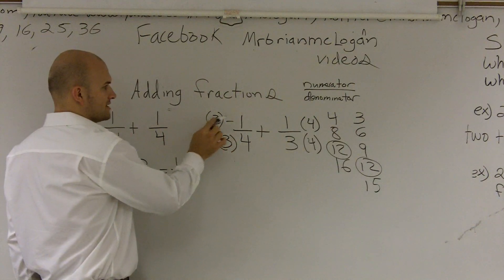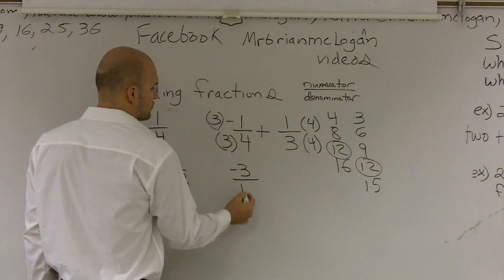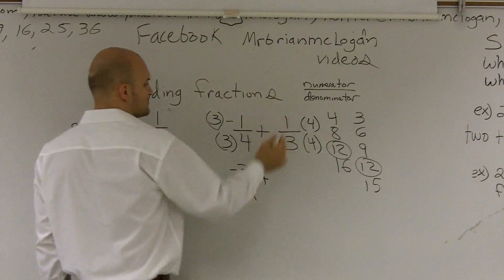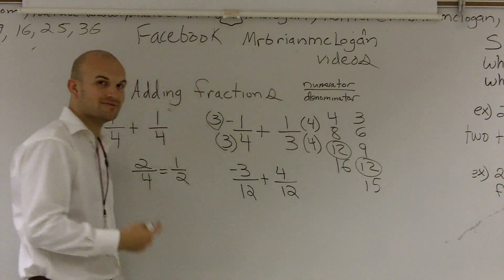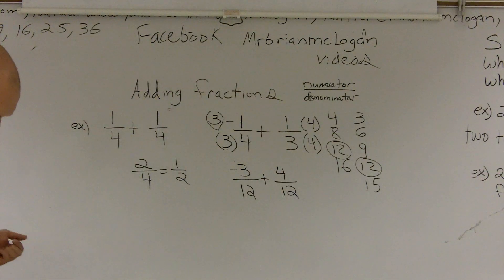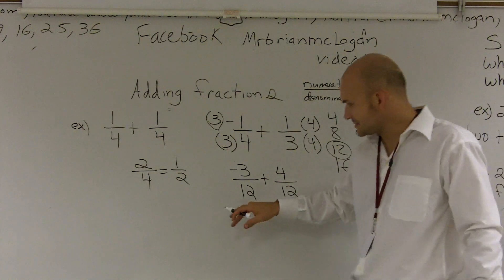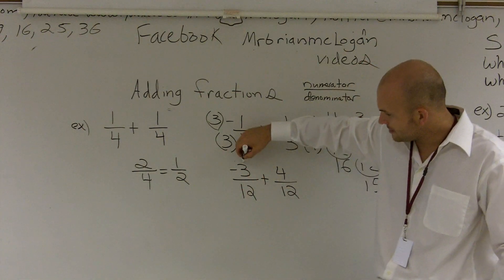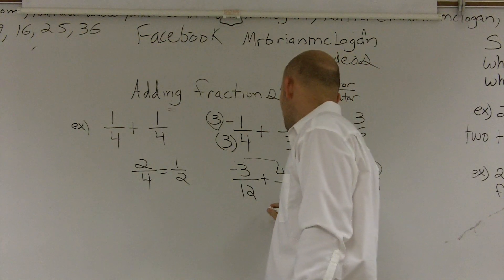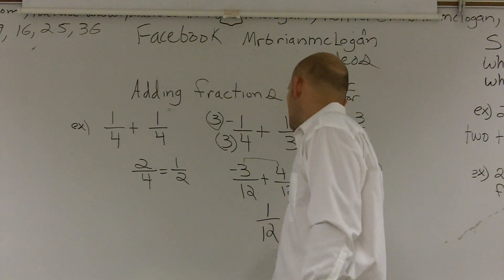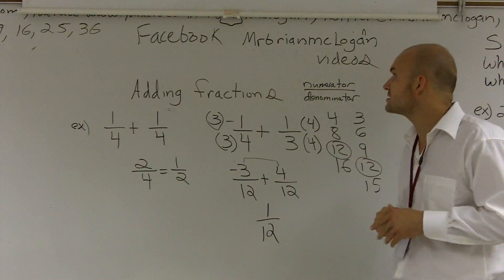So when you multiply fractions, 3 times negative 1 is a negative 3. 3 times 4 is 12, plus 1 times 4 is 4. 3 times 4 is 12. Now, thankfully, I have common denominators. So what I can do is keep my denominator the same, and then just add a negative 3 plus a 4. So a negative 3 plus 4 is going to give me 1. And my denominator is still going to be 12. So my answer to a negative 1 fourth plus 1 third is going to give me 1 twelfth. And that's how it works.